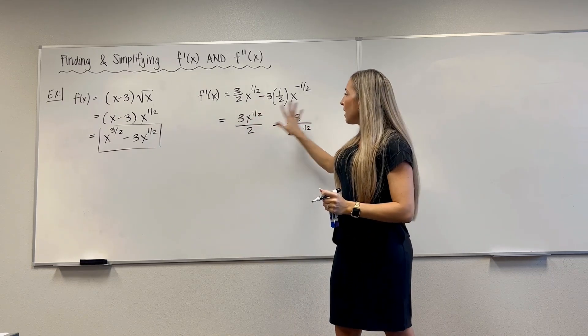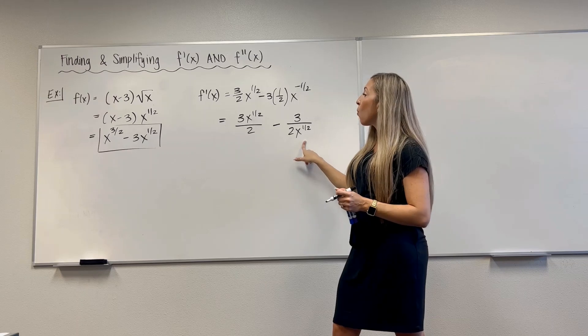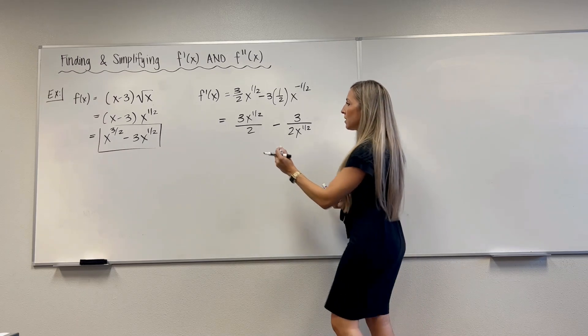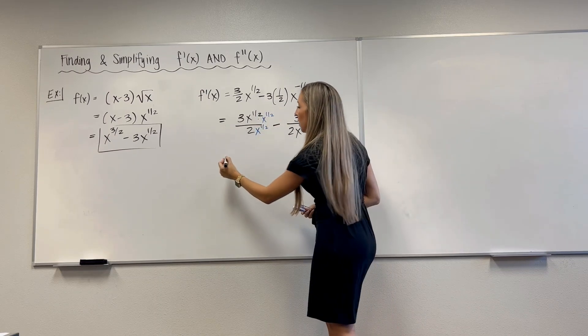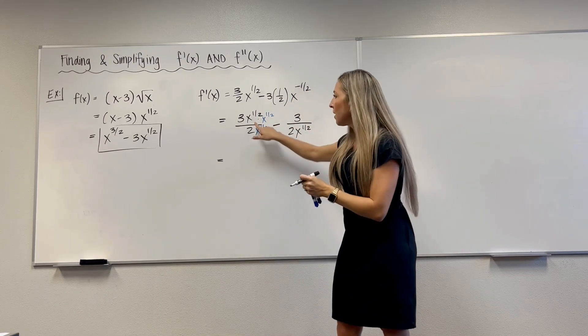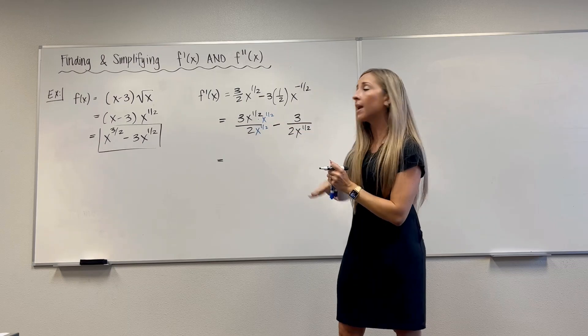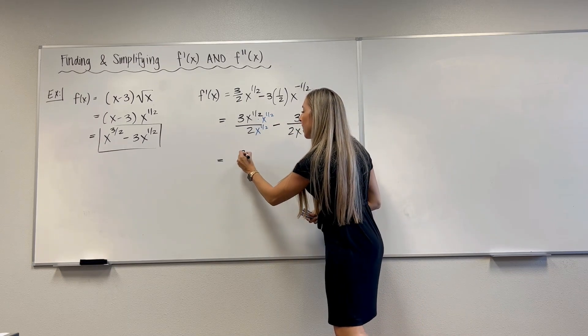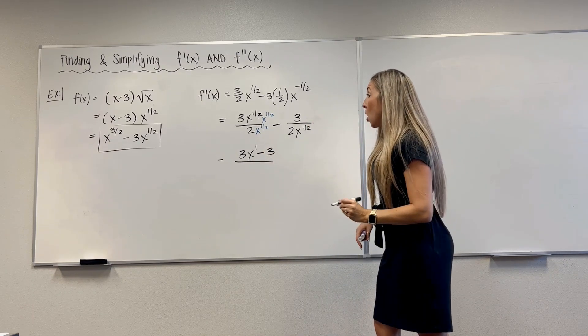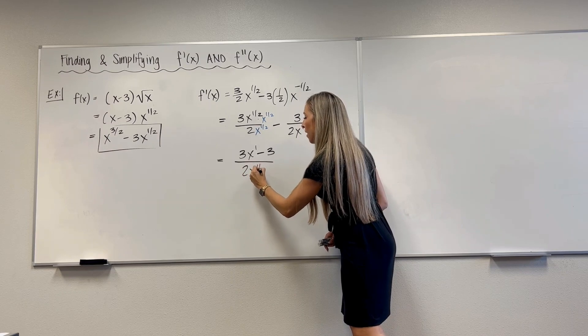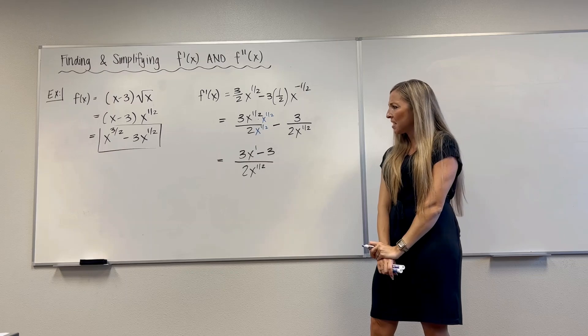So let's clean things up a bit. This is 3x to the 1 half over 2 minus 3 over 2x to the 1 half. So I'm getting ready to get a common denominator. What is that common denominator? It's 2x to the 1 half power. So this guy needs an x to the 1 half, x to the 1 half, and then we're in business. So this is going to be x to the 1 half times x to the 1 half. What do we do with the exponents? Add them together. So this is going to be 3x to the 1st minus 3, all happy together in the numerator, over 2x to the 1 half.